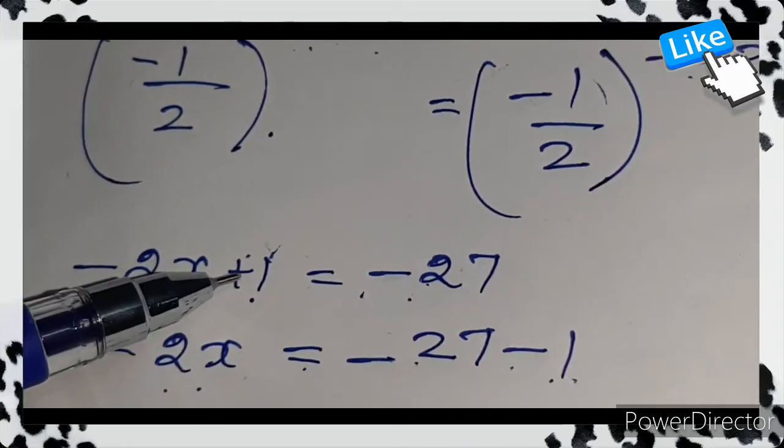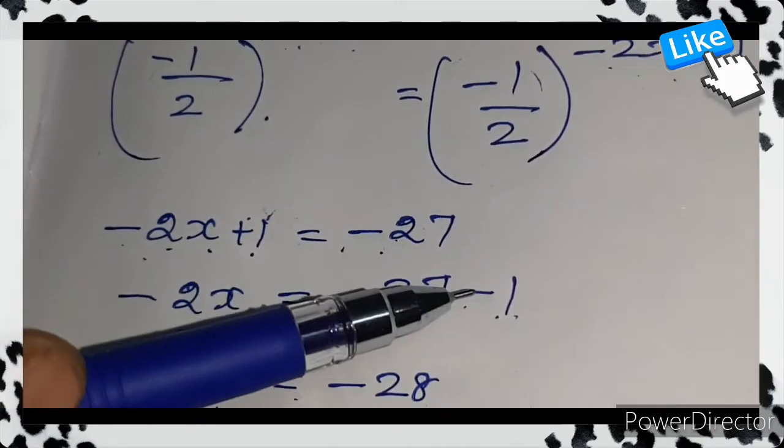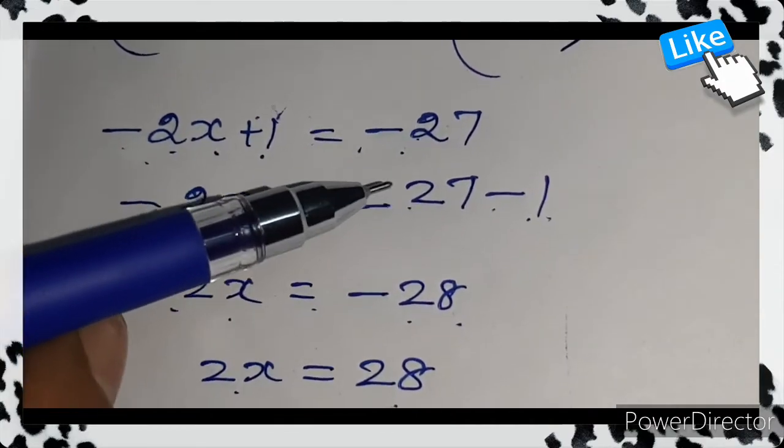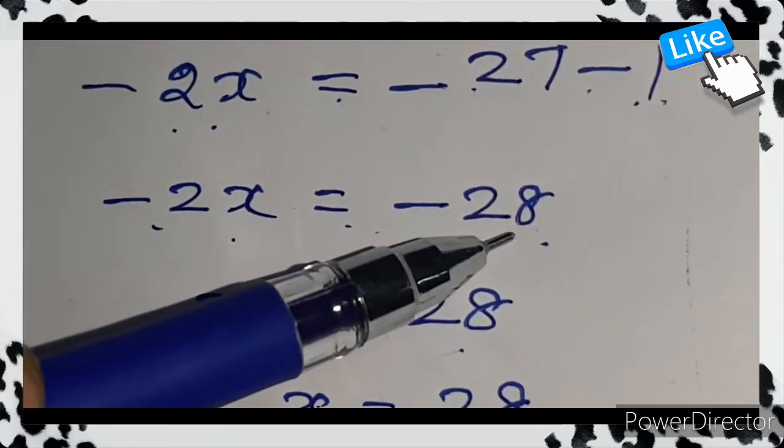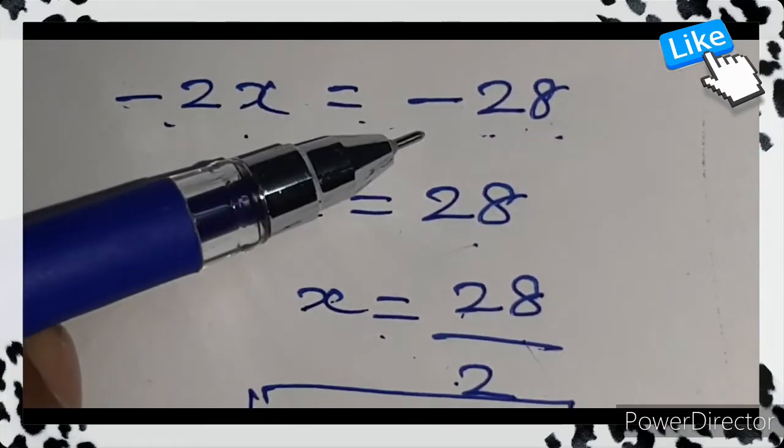We bring the +1 to the other side. That is, we collect the variable on one side and the constants on one side. -27-1 = -28.